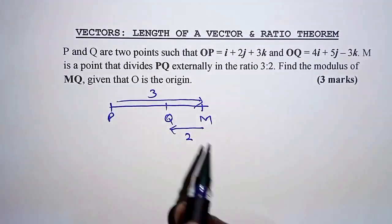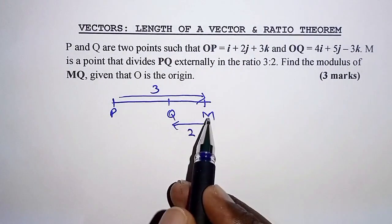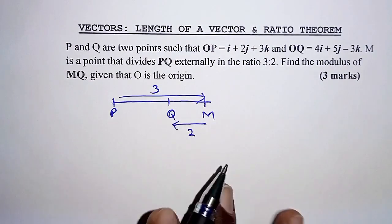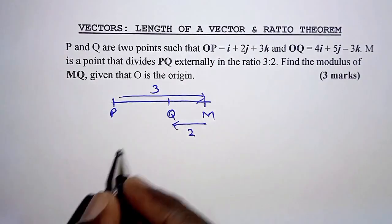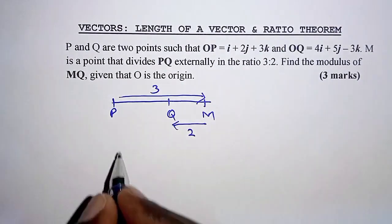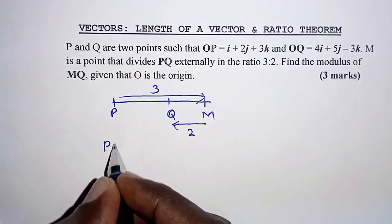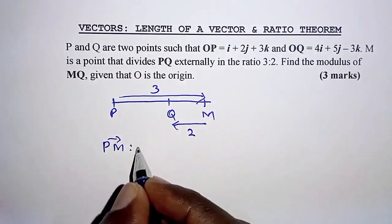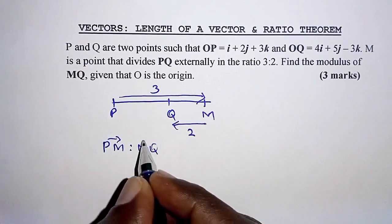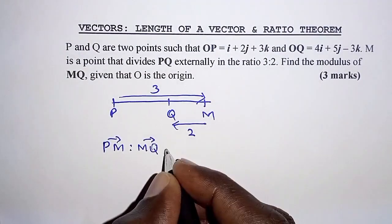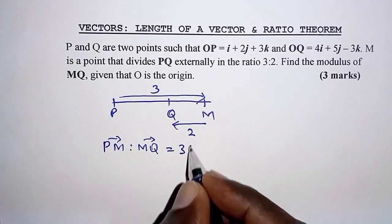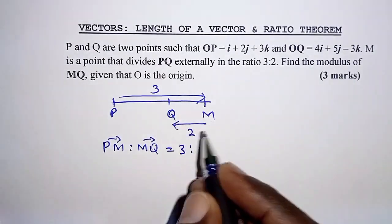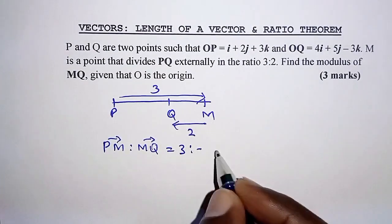Now we need to take note that when you are moving from M to Q we are moving in opposite direction, so we will denote that by negative. We can rewrite the ratio as PM to MQ equals PM is 3 units and MQ is 2 units but in opposite direction, so that is negative 2.